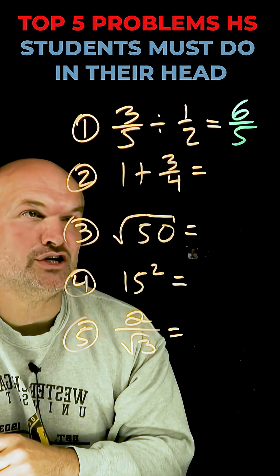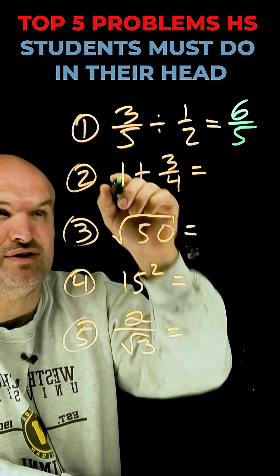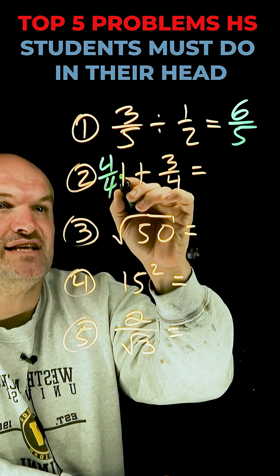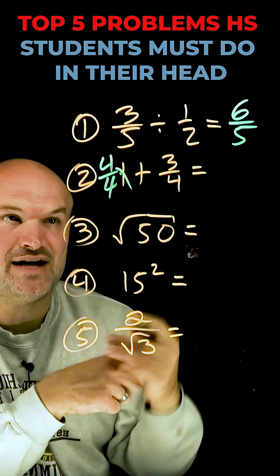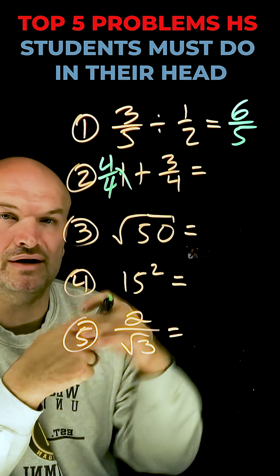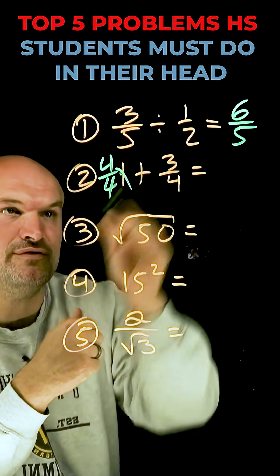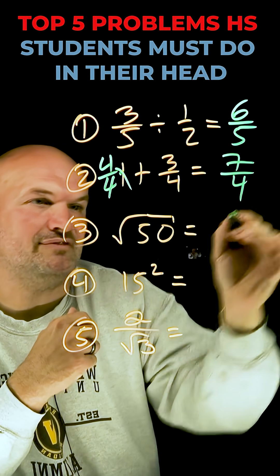When you're adding an integer to a fraction, just change your integer to a fraction. Instead of dealing with a one, I can rewrite that as 4/4. Now, when adding and subtracting fractions, as long as your denominator is the same, you just apply the operation to your numerator. So in this case, that's 4/4. Four plus three is seven. Therefore, the answer is 7/4.